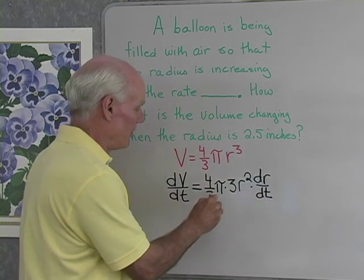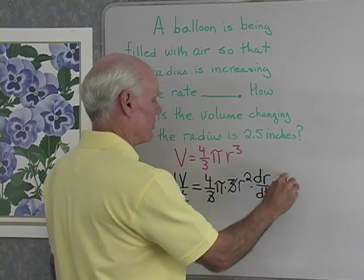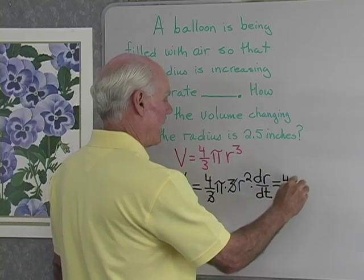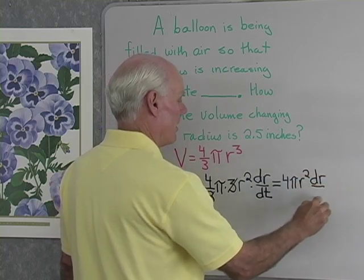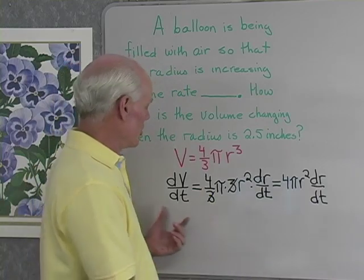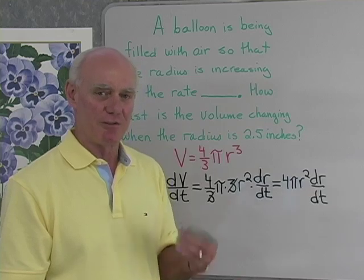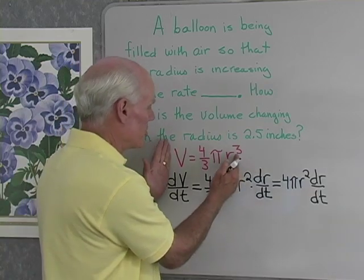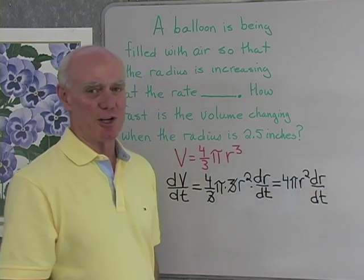Now I guess I could simplify a little bit here. Let's divide out those threes. I'll simplify this down to 4 pi r squared times dr/dt. So here's the relationship between the rates of change of volume and the rate of change of the radius. Here's the relationship between volume and radius. Here's the relationship between the rates of change.